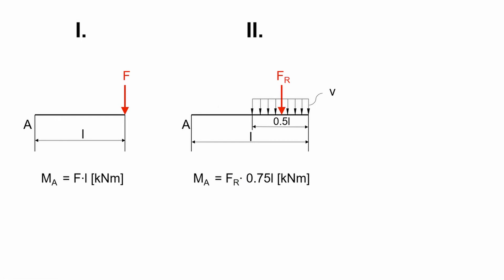We have this value here of 0.75 because first of all the load is applied on 0.5L. So the application point of the resultant force is at 0.25L, and the remaining distance to point A is 0.5L.